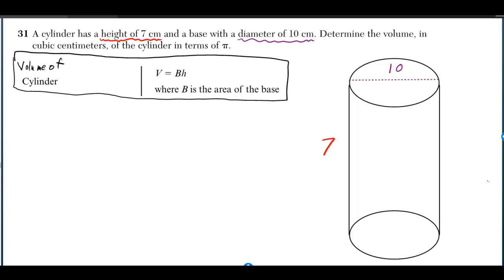A cylinder has a height of 7 centimeters and a base with a diameter of 10 centimeters. Determine the volume in cubic centimeters of the cylinder in terms of pi.